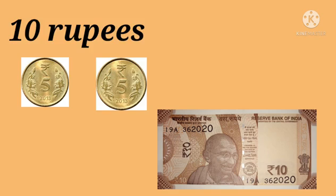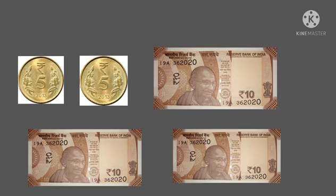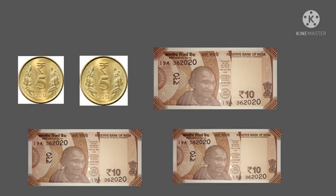10 rupees: 2 coins of 5 rupees, or 1 currency note of 10 rupees. 20 rupees: 2 coins of 5 rupees and 1 currency note of 10 rupees, or 2 currency notes of 10 rupees.